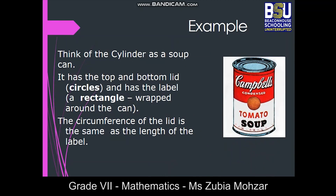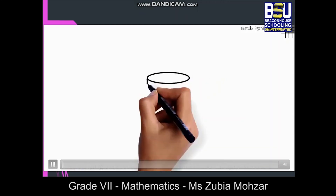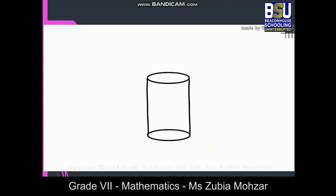Take an example from our daily life — a can, a soup can. Look at this can. Can you identify how many circles there are? Yes, there are two circles, one at the top and other at the bottom, and the central part where you can see the label is a rectangular one. The circumference of the lid is the same as the length of the label. A circle, a curved surface, and another circle — this is a cylinder, a right circular cylinder to be precise.